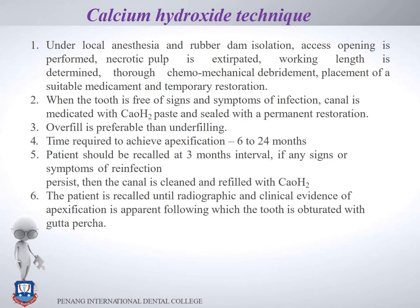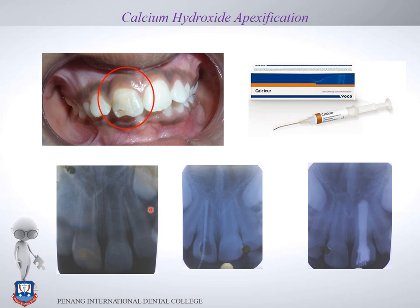Every three months a radiograph is taken to assess for radiographic appearance of the calcific barrier. Every six months the cavity is opened and the blunt end of a gutta-percha point is used to feel for the calcific barrier, which may be present clinically but not visible radiographically. The discolored tooth shown indicates pulpal necrosis; non-setting calcium hydroxide is filled into the canal, and the blunt end of gutta-percha is used to gently probe for apical closure.